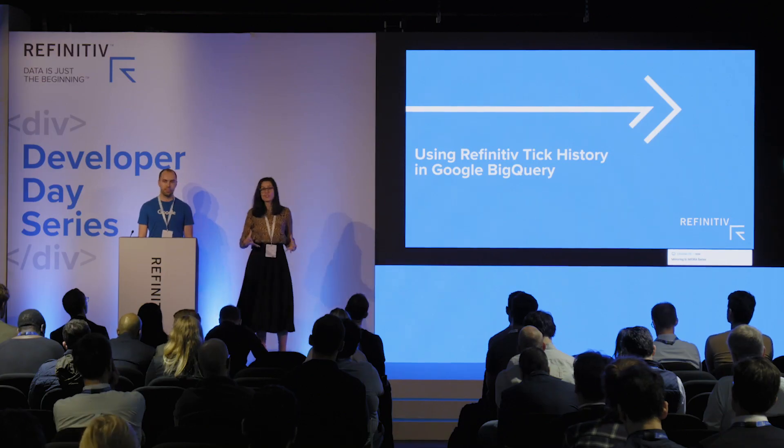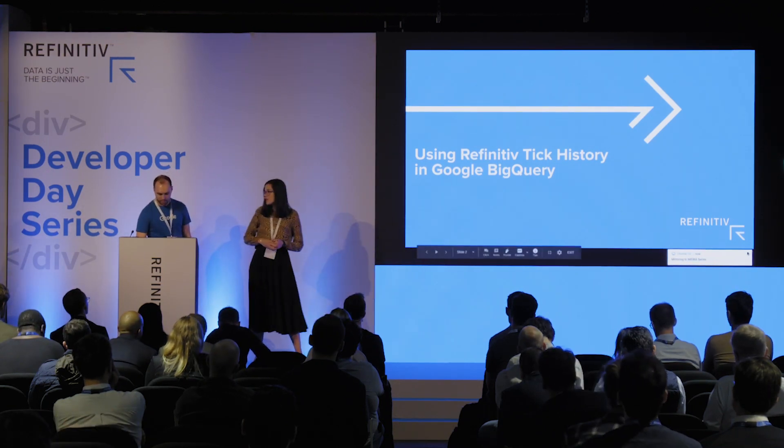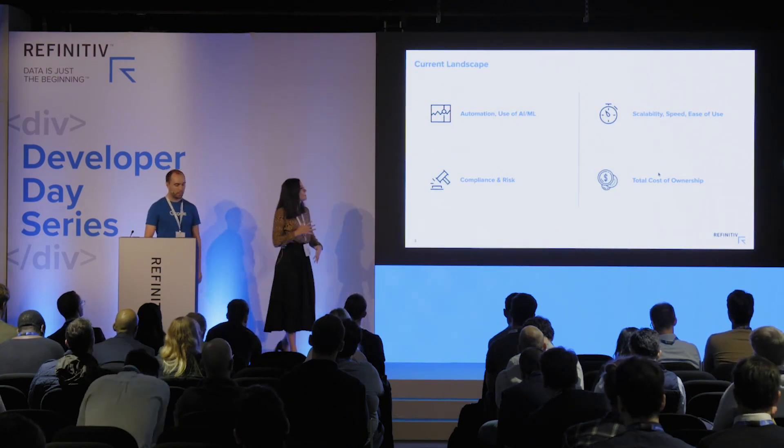We've been on this journey of making sure that we make our content available where the capability sits. Starting with some of the key trends in the market: the increased use of automation, AI and machine learning. The data you use to extract insights is key because the outputs are only as good as the data quality. Our tick history data is very widely used in the market — it's a market-leading offering and is used as a benchmark against alternative data sets.